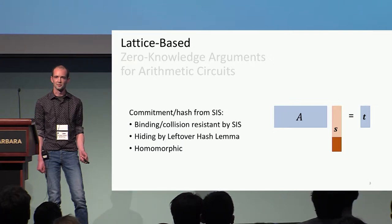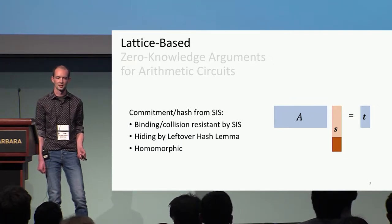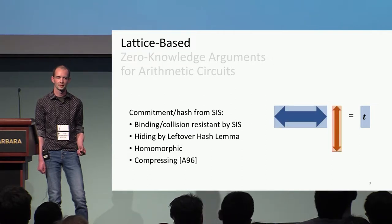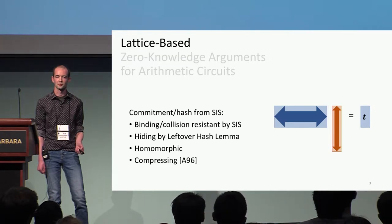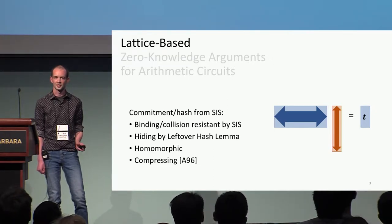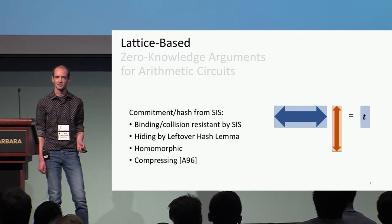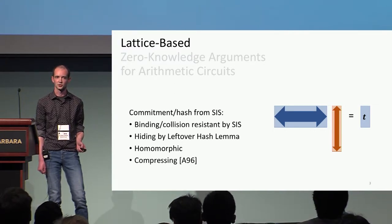The commitment or hashing operation is just matrix multiplication, so this is a homomorphic commitment scheme. Something important for our zero-knowledge proof is that this is also a compressing commitment scheme. We can make the matrix as wide as we like and the message we're committing to as long as we like, and we'll still get really short, succinct commitments.